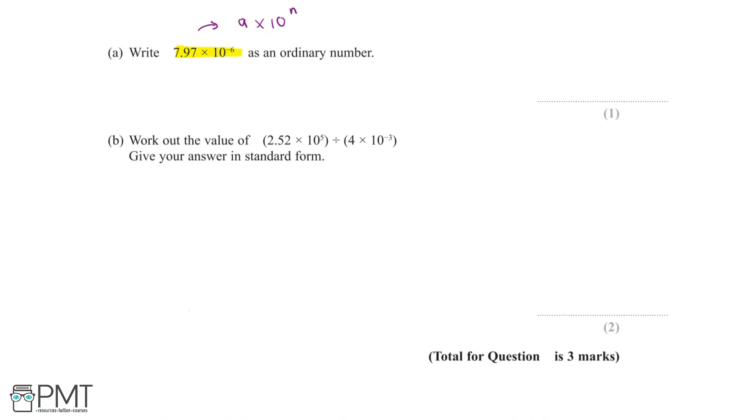So we have 7.97 × 10^-6. This means the number is a decimal because if the power of 10 is less than 0, the number is getting smaller.